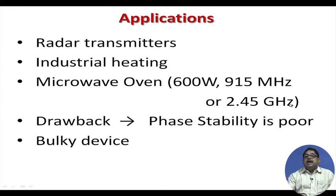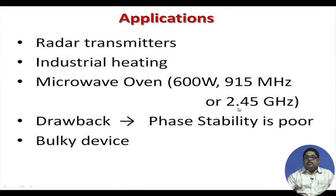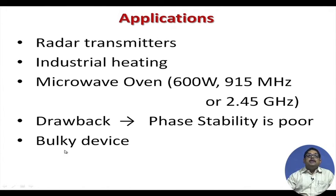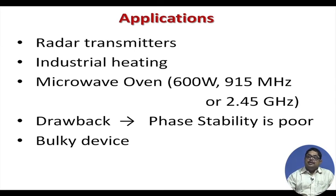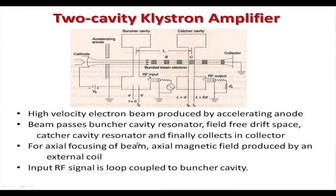In microwave ovens in all homes, you do not require a stable source — you only need the source to give power; phase stability does not matter. Microwave ovens invariably use a magnetron as the source of power, with 600 watts as typical output. They operate at 2.45 GHz in most countries because 2.45 GHz is the ISM (Industrial, Scientific, and Medical) band, which is license-free. In some countries, 915 MHz is also an ISM band. The magnetron is a bulky device due to the required magnet.